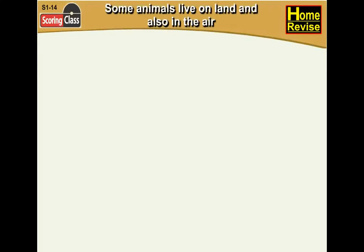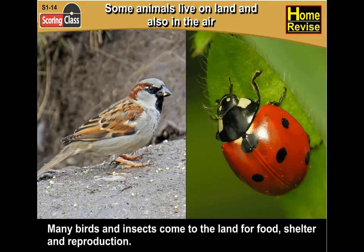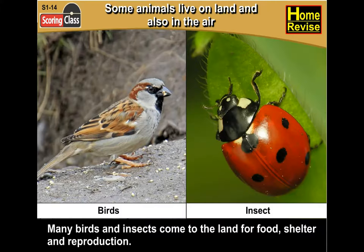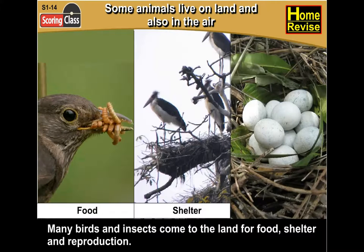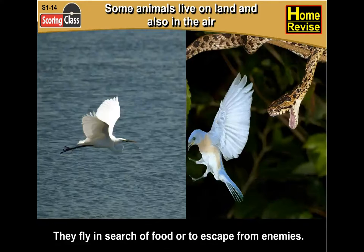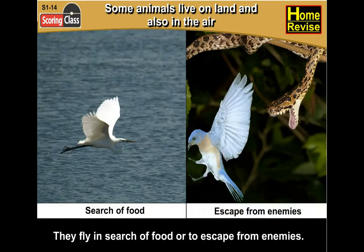Some animals live on land and also in the air. Many birds and insects come to the land for food, shelter and reproduction. They fly in search of food or to escape from enemies.